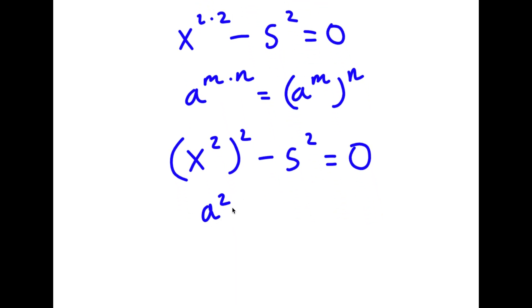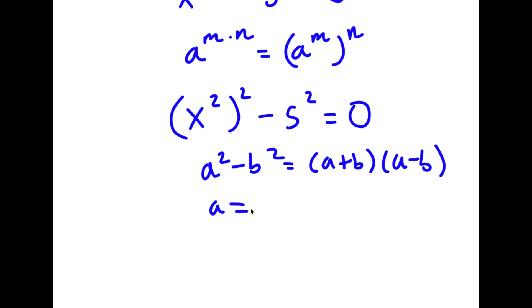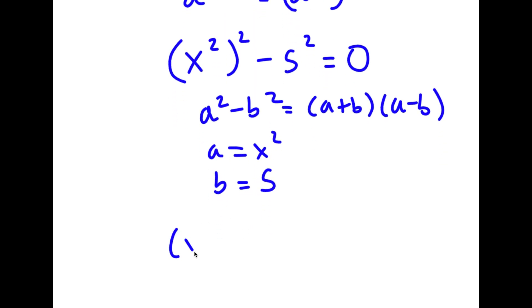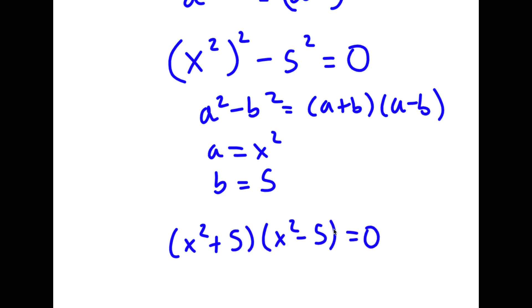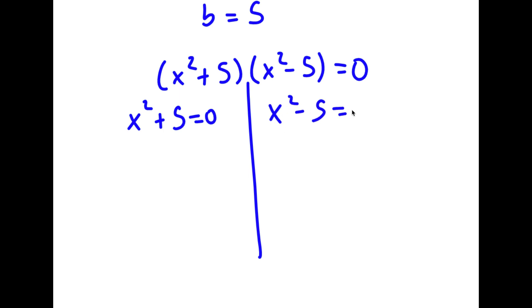Now if I have something in the form a squared minus b squared, this equals a plus b times a minus b. So in this case, a is x squared and b is 5. So I have x squared plus 5 times x squared minus 5 is equal to 0. This gives me two equations: x squared plus 5 equals 0, and x squared minus 5 equals 0.